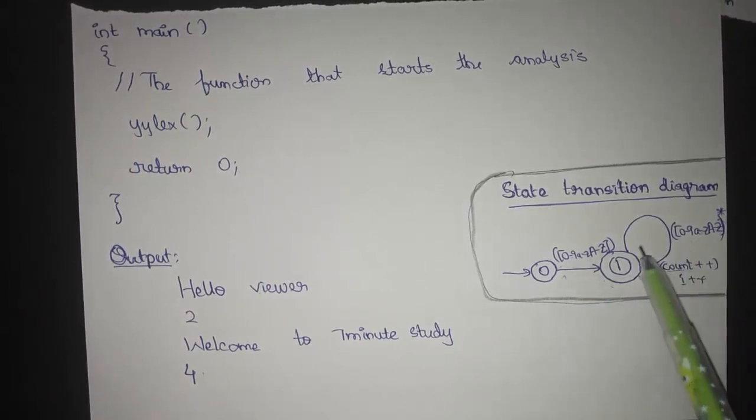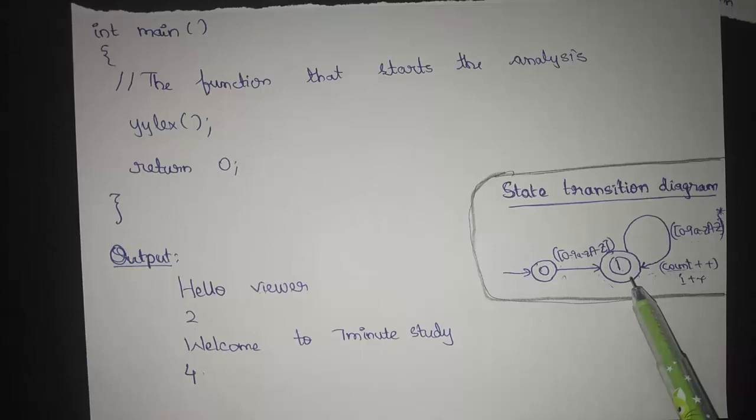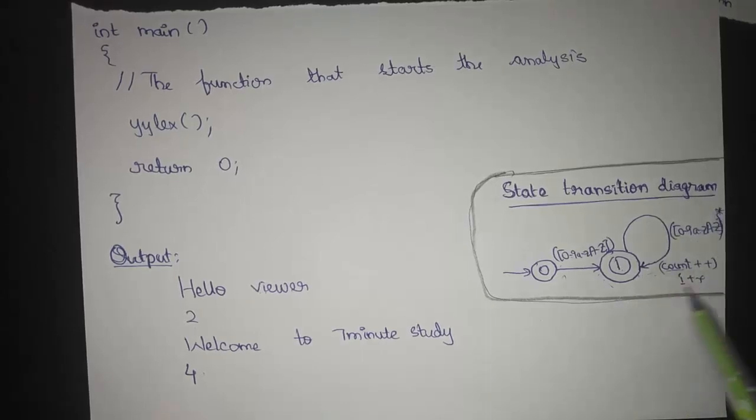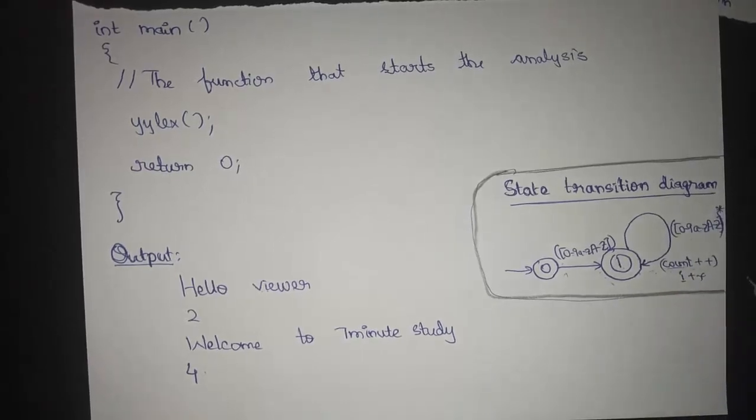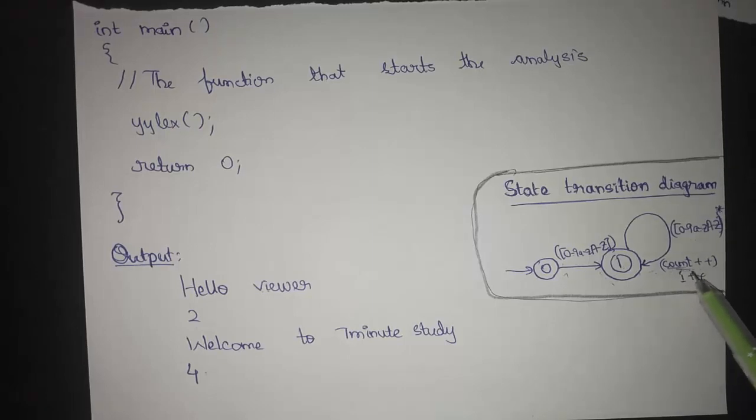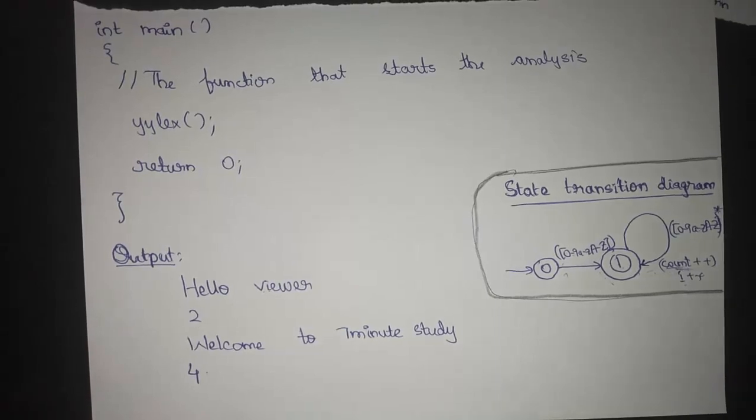A state transition diagram would be explained as below. Whenever we get a word, we are going to the next state from initial to final state and we are just incrementing the number of words, that is i. This count, which is nothing but the count of words, here is the i variable which also acts as the flag.